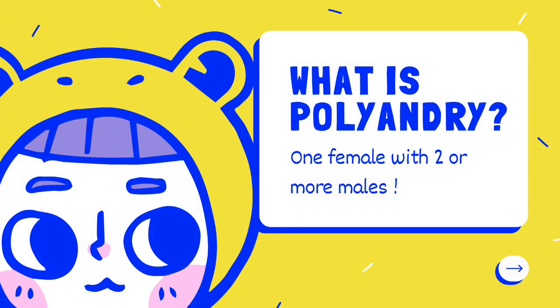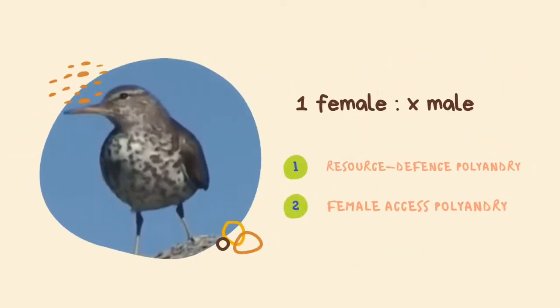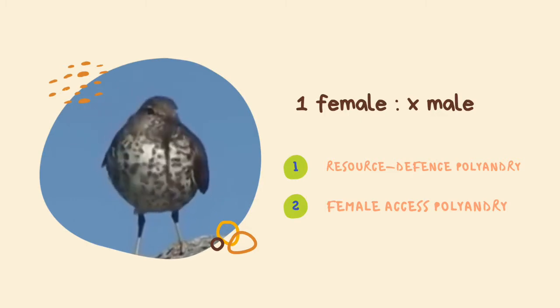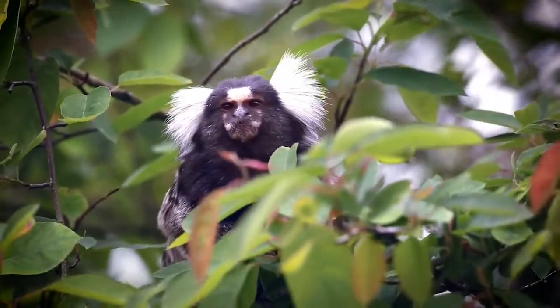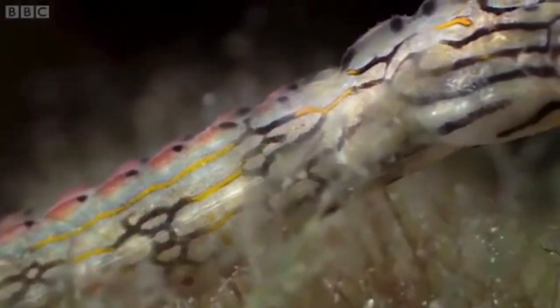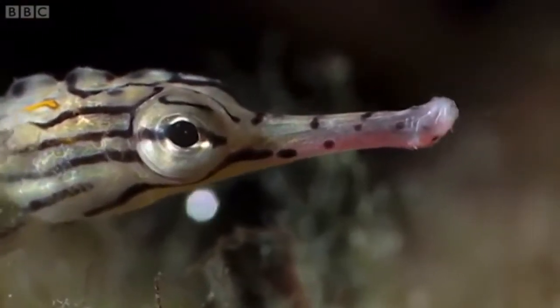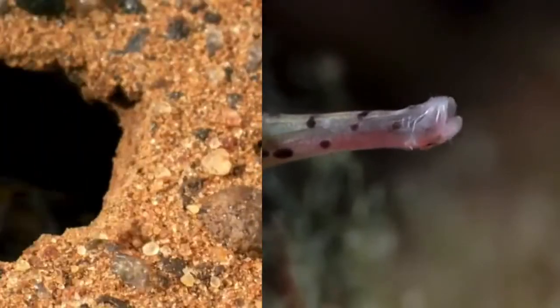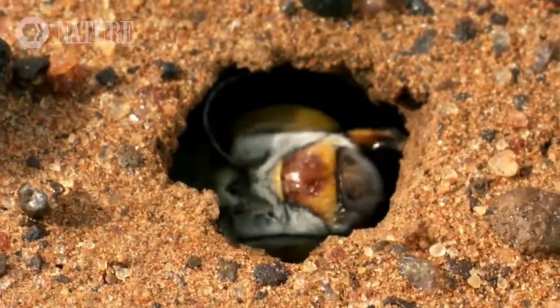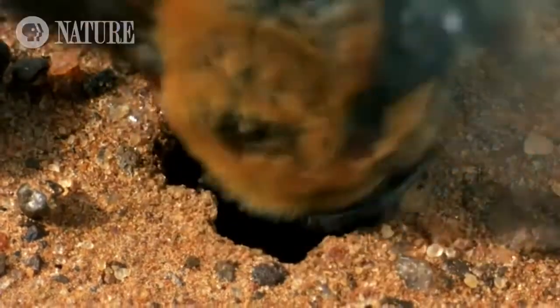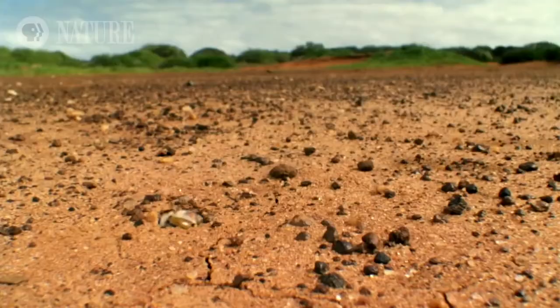What is polyandry? Females control access to more than one male. Polyandry is divided into two types: resource defense polyandry and female access polyandry. For example, marmoset, pipefish, and honeybees — one female of one species mating with two or more males. Because females invest in eggs at a greater cost than male sperm, polyandry is rare. Females provide parental care, males' territories are small, while females have super territories that may encompass the nesting areas of several males.